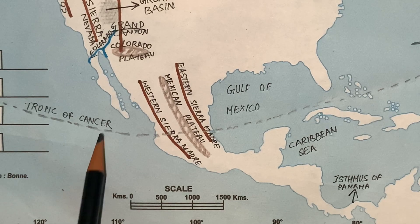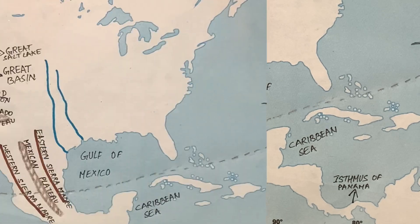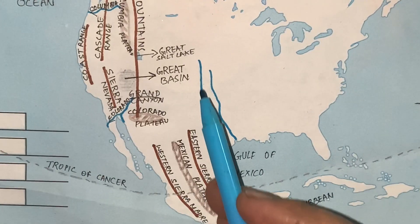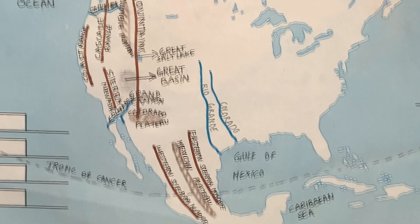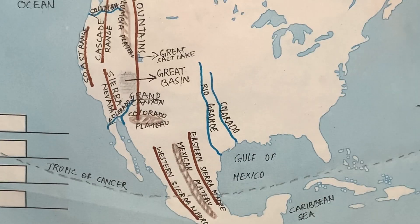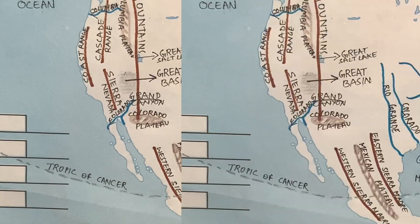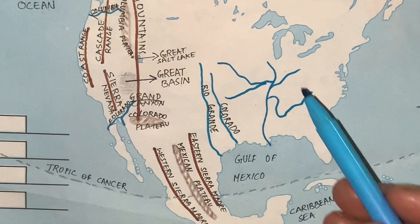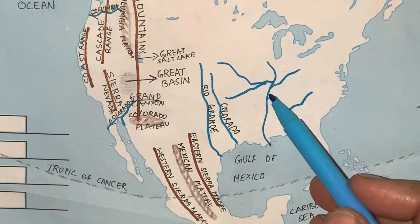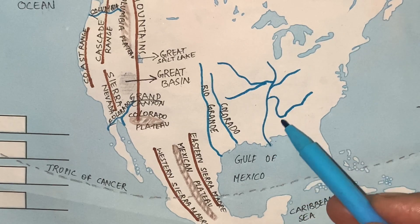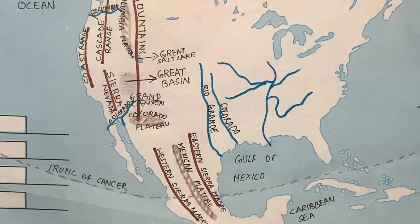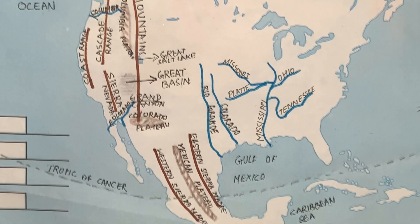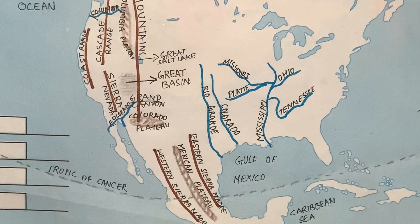Neatly draw a line passing through the southern part of this continent and write its name — Tropic of Cancer. Use blue color to draw the rivers and write their names. Draw the main river with its four tributaries, then write their names neatly.